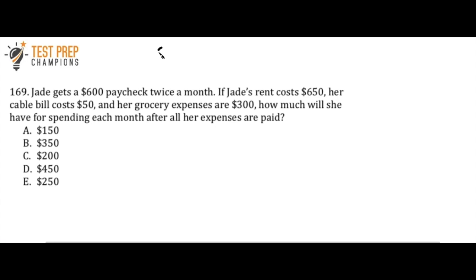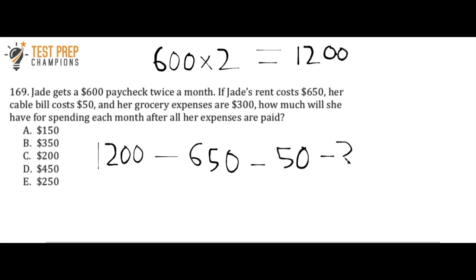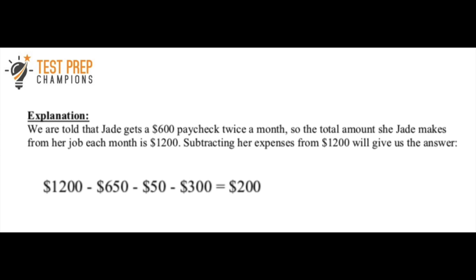So basically, Jade is getting $600 twice a month. So let's do 600 times 2, and that is $1,200. So we assume that she's making $1,200 a month. So from that $1,200, what we have to do is we have to subtract her rent payments. So we subtract $650, and her cable bill costs $50, so we're going to subtract another $50, and since her grocery bill is $300, we also want to subtract $300. So doing this in our calculator gives us $200, so C is the correct answer here, and I'm going to put the written solution up on the screen. If you want to see it, you can pause the video and study it.